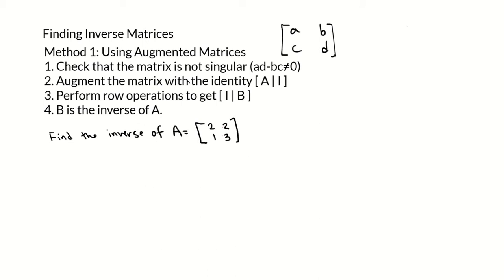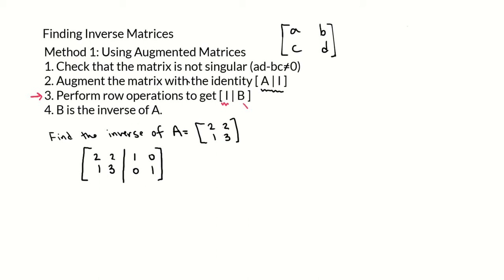Our next step is to augment A with the identity matrix. So we write the matrix A — 2, 2, 1, 3 — then augment with the identity, which is 1, 0, 0, 1. Our goal is to perform row operations until we get the identity on the left side of the augment, and then the matrix that remains on the right side where the identity used to be will be the inverse matrix of A.